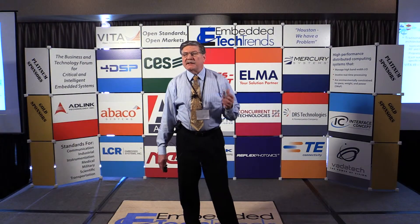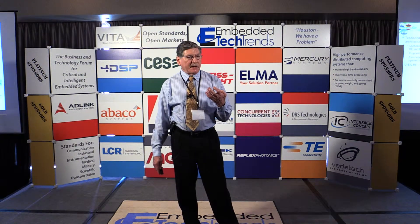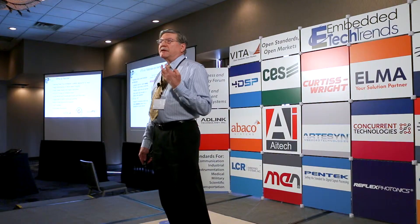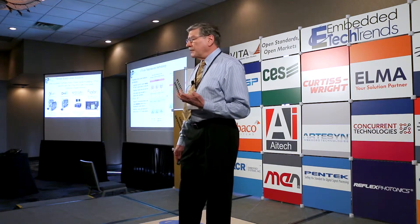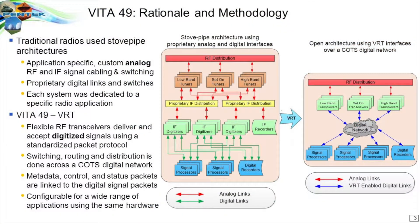What VRT does is it digitizes the signals as early as possible, as close to the antenna as possible, and then routes the digitized signals through digital switched networks to implement the connectivity for different systems. The red lines represent analog signals, and in the case of going to VRT, the blue lines have largely replaced a lot of the red lines — the analog plumbing. That's the rationale for Vita 49 or VRT.